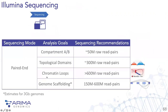For sequencing recommendations, all sequencing is done in paired-end mode. Defining compartment A and B requires very shallow sequencing — about 50 million reads or fewer. Defining topological domains requires approximately 300 million read pairs. For high-resolution loop structures, approximately 600 million read pairs are recommended — useful for defining gene regulatory mechanisms. For genome scaffolding, it depends on draft assembly quality and genome size, but generally for a three-gigabase genome, around 150 to 600 million read pairs.